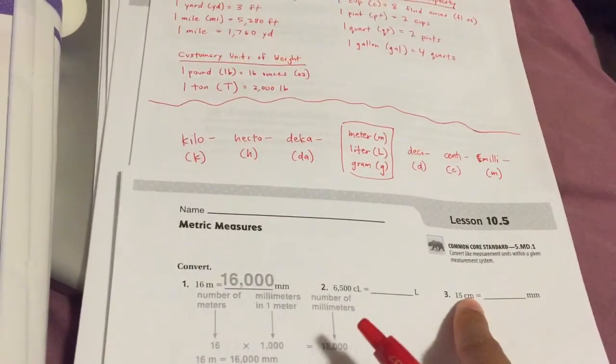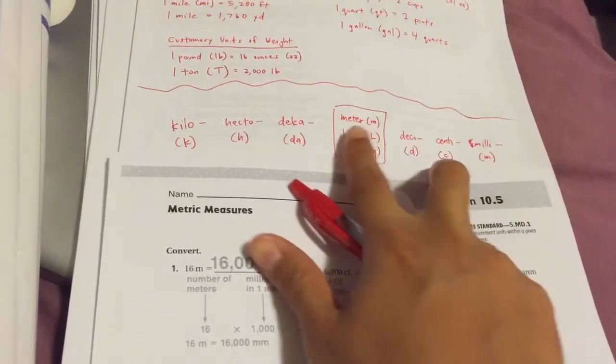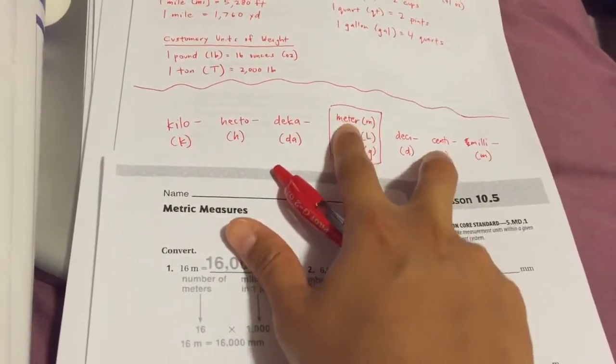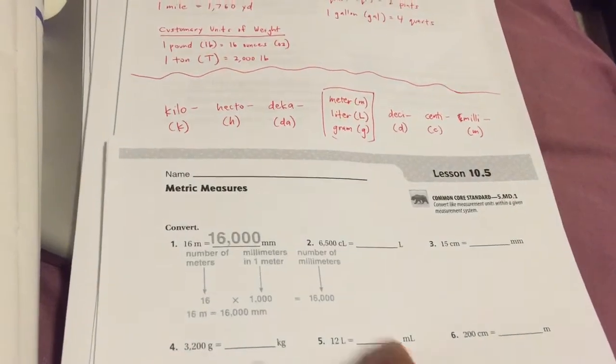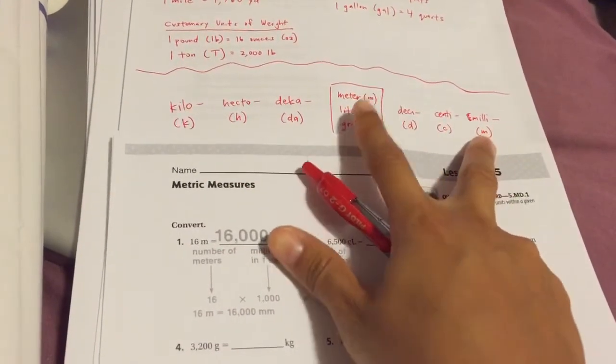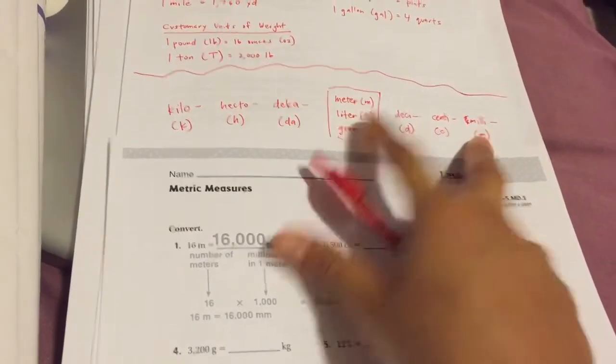If you see CM, it'll be centimeter. If you see ML, it would be milliliter. Okay, that's part one.